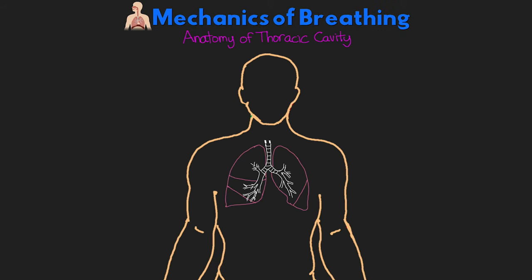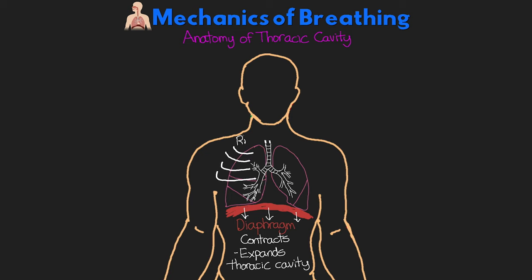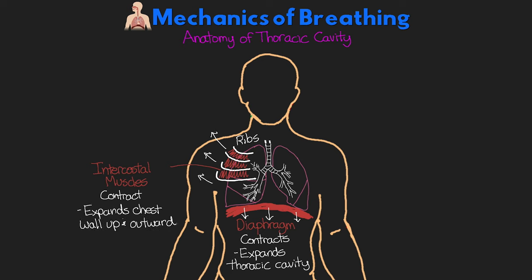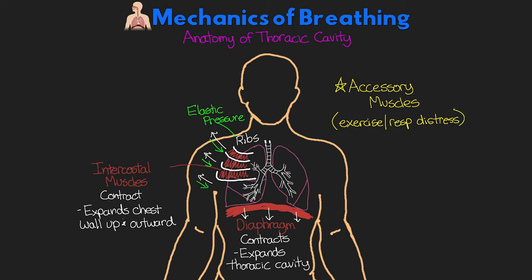Now let's talk about the anatomy of the thoracic cavity. At the base of the lungs, they're resting on a large muscle called the diaphragm. When we breathe, the diaphragm contracts, causing it to move down, which expands the area of the thoracic cavity. Surrounding the lungs, we have our ribs, which help to protect them. In between the ribs, we have the intercostal muscles — when we breathe, we contract these intercostal muscles, which pull the ribs outward and help expand the chest wall up and outwards. The ribs also have their own elastic pressure that, when expanded, want to bring the ribs back in. In addition, we do have other accessory muscles used when exercising or in respiratory distress, which I will cover shortly.